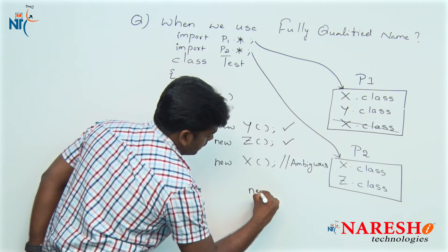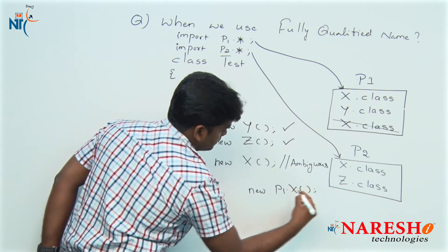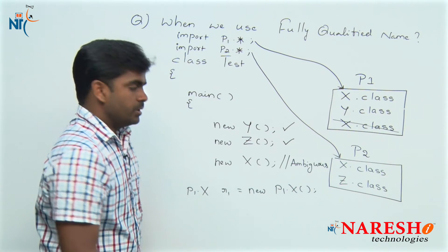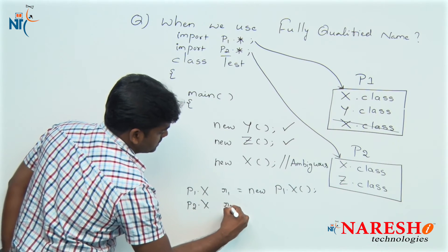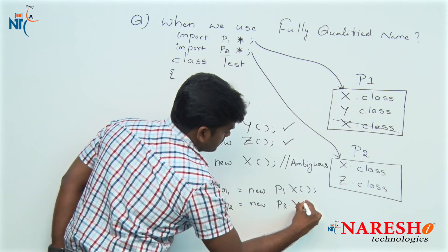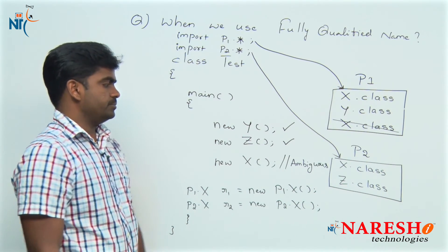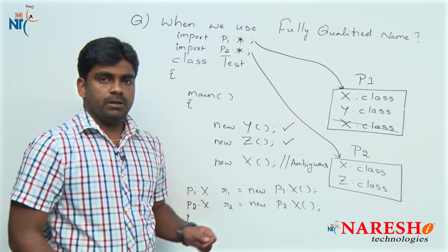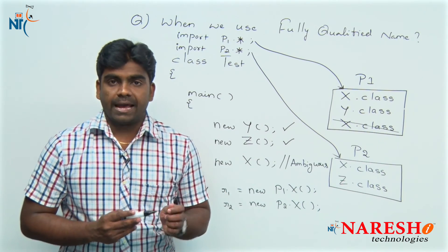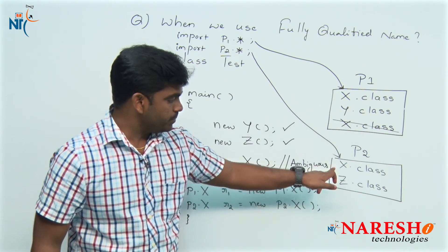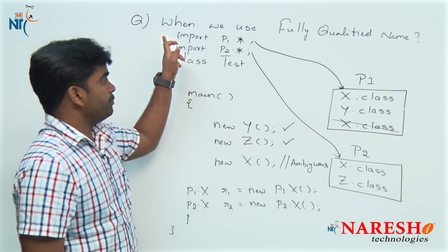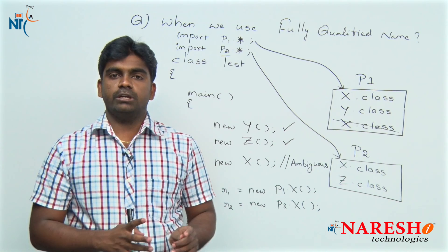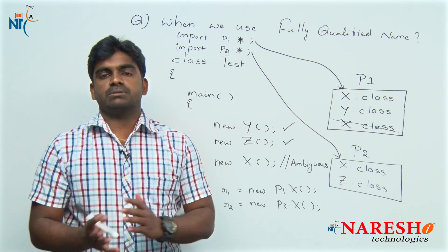Whenever you are creating an object for X, you should specify p1.X as the class and address — the reference variable is also p1.X. And if you create an object for p2's X, then p2.X r2 = new p2.X(). This is the fully qualified name in use. So when we use a fully qualified name: if you want to access two classes with the same name from two different packages, instead of an import statement we should go for a fully qualified name — there is no second option. Hope you understood the advantages of fully qualified name. For more videos please subscribe to NARESH IT channel. Thank you.